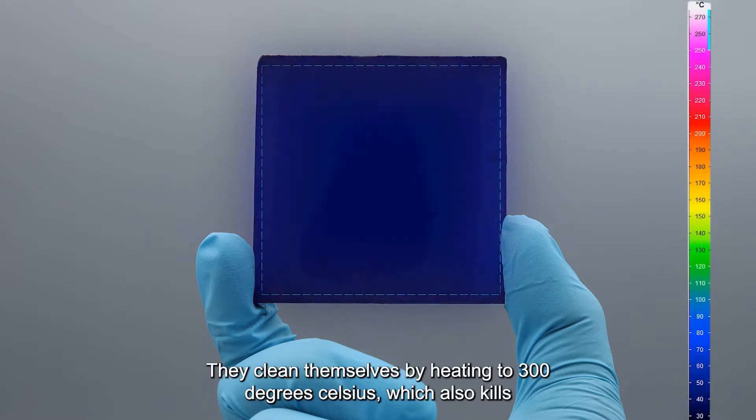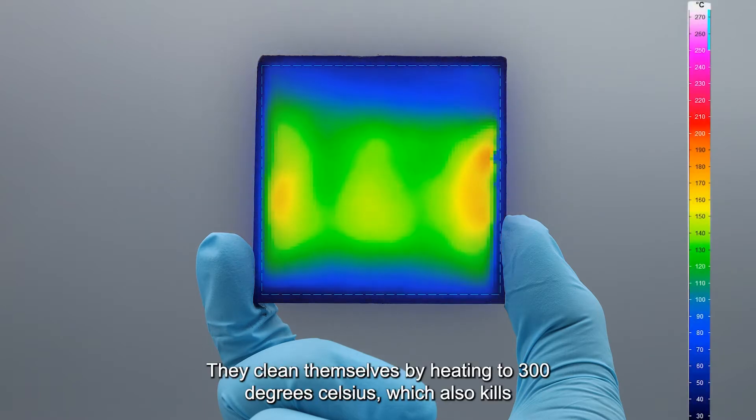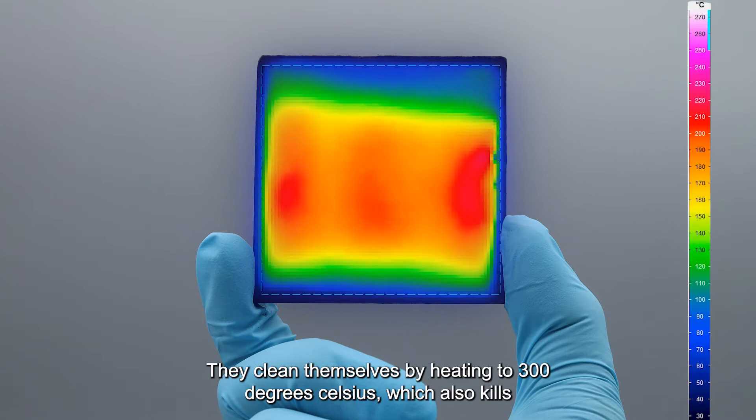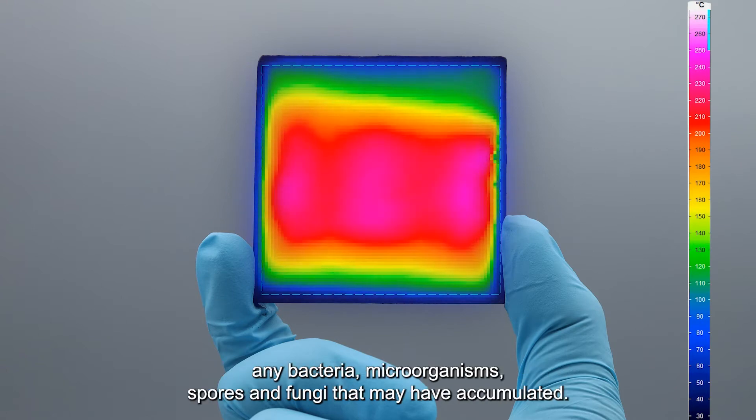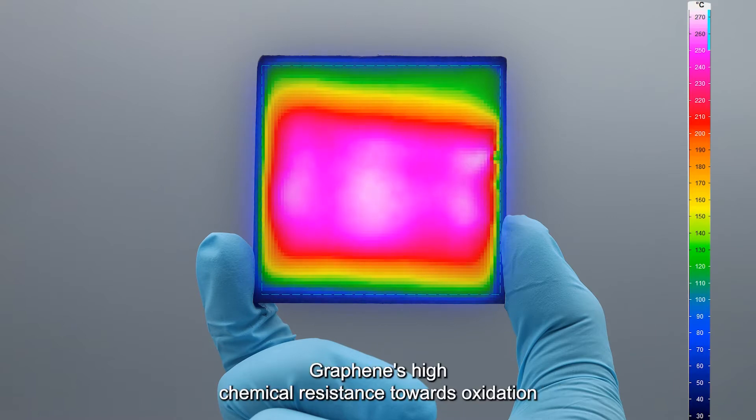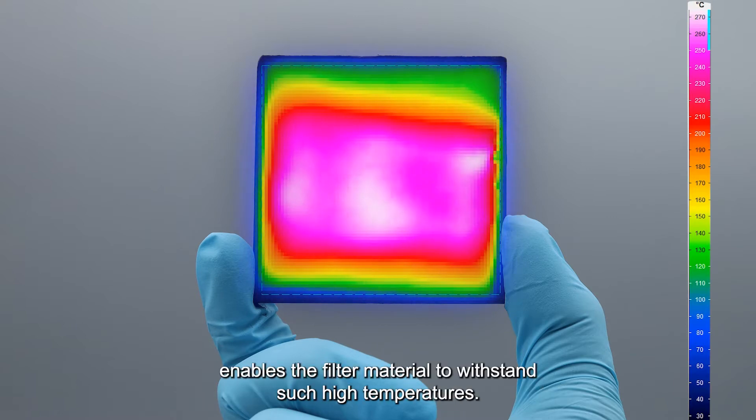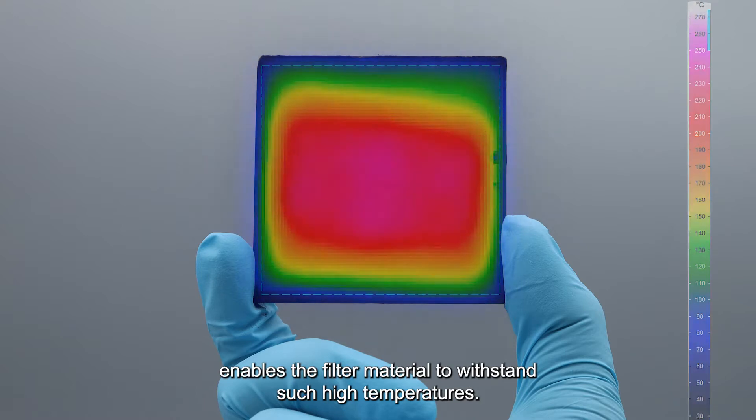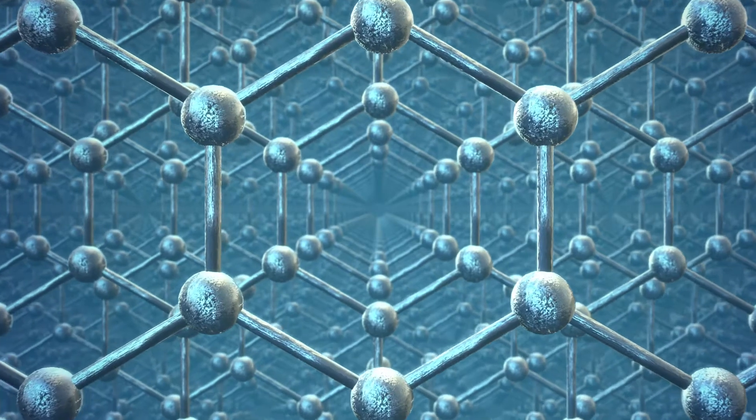They clean themselves by heating to 300 degrees Celsius, which also kills any bacteria, microorganisms, spores, and fungi that may have accumulated. Graphene's high chemical resistance towards oxidation enables the filter material to withstand such high temperatures.